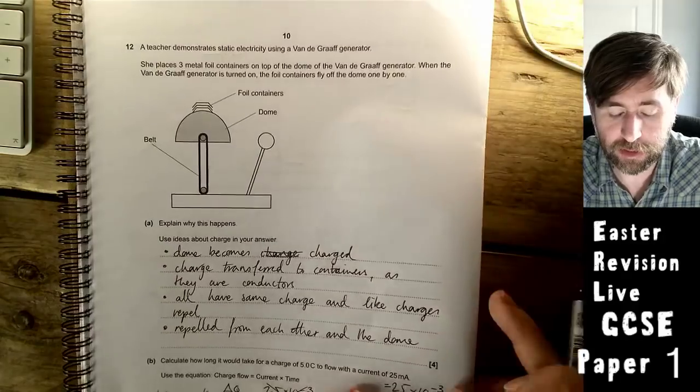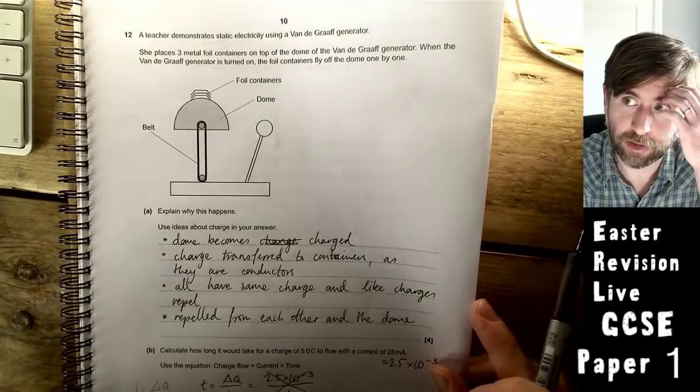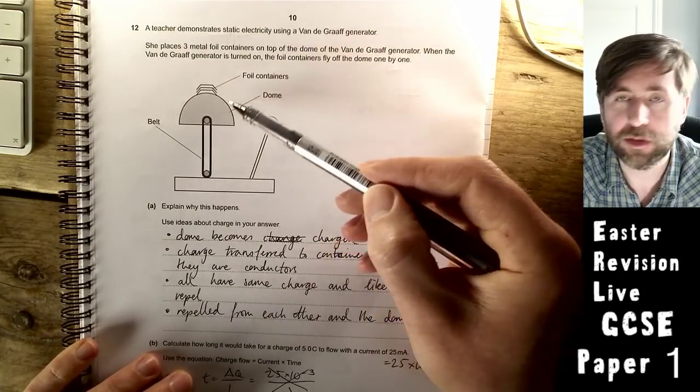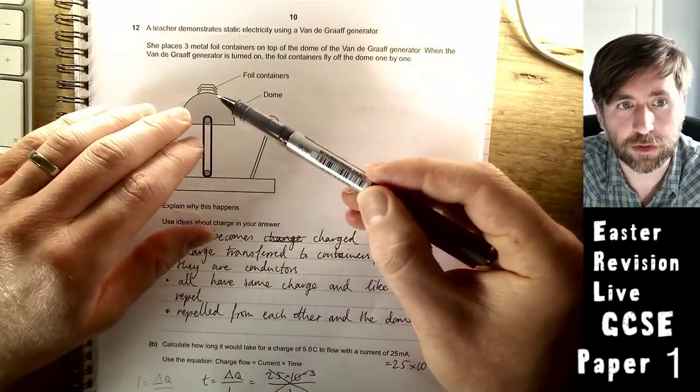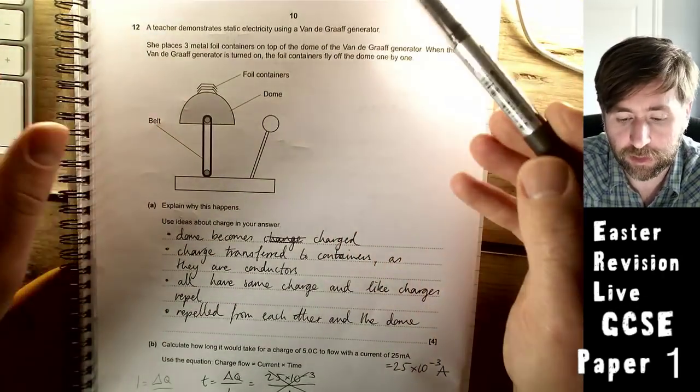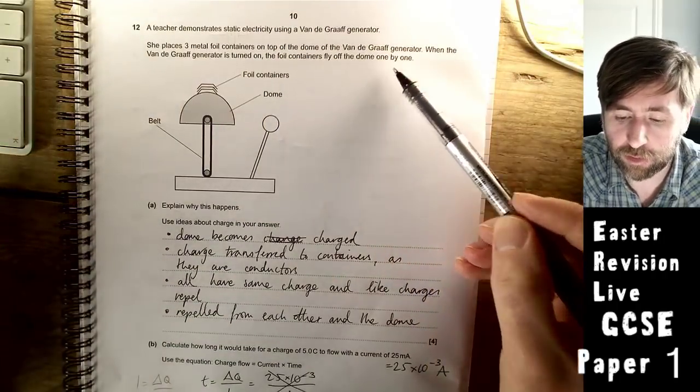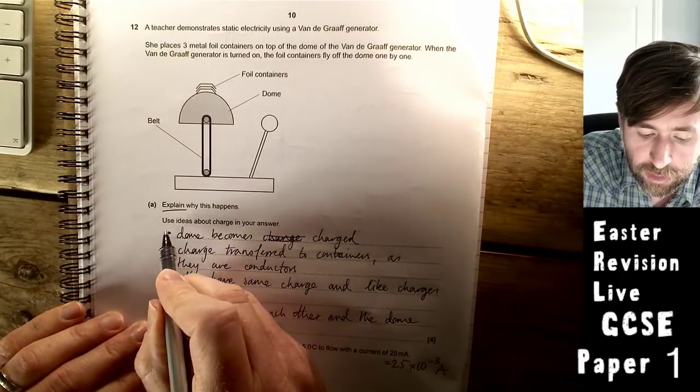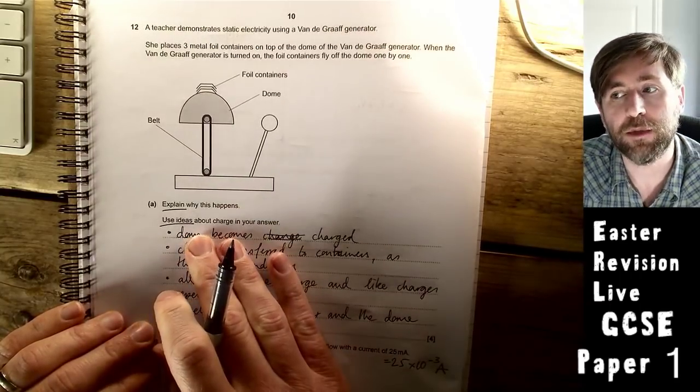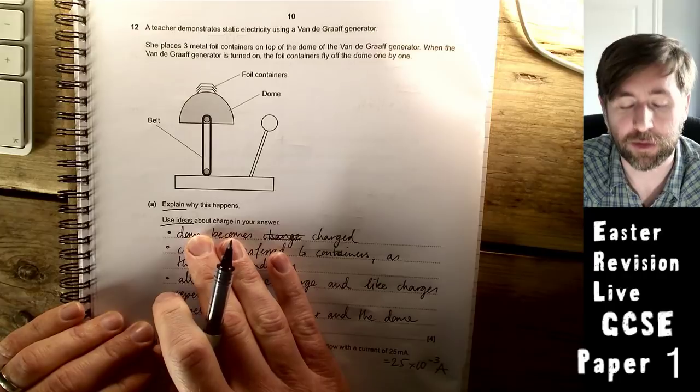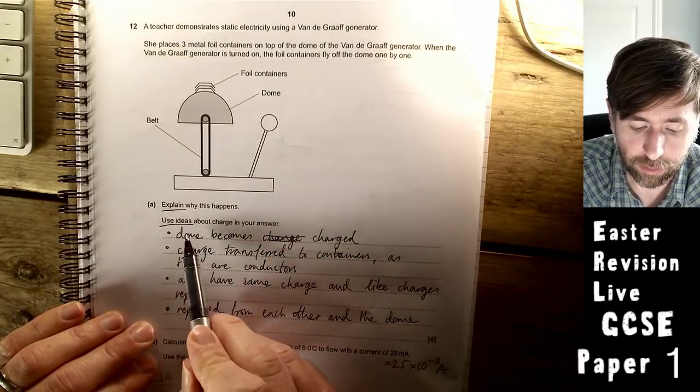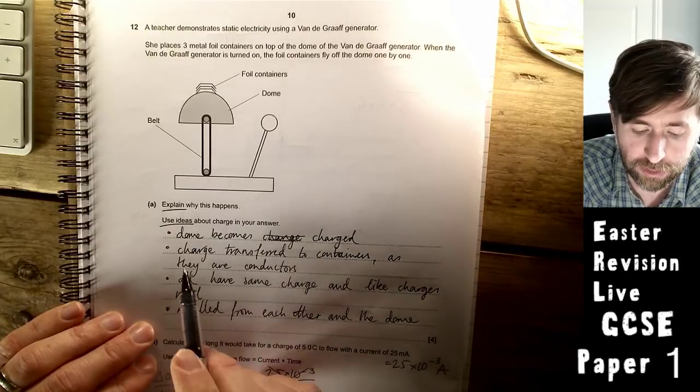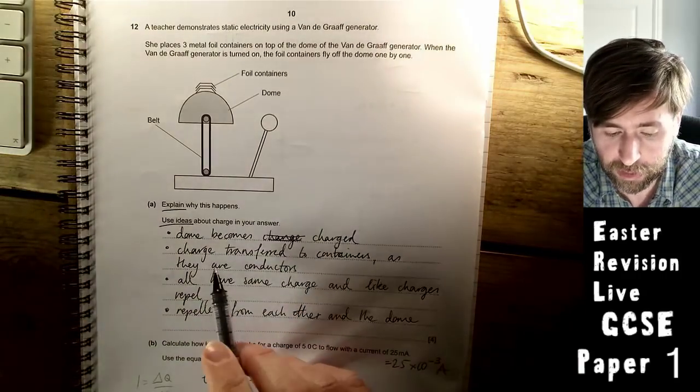Teacher demonstrates static electricity using a Van de Graaff generator. This is the really cool experiment. I love doing this one. You put some foil containers, turn on the Van de Graaff and off they go. The foil containers fly off one by one from the dome. Explain why this happened and use ideas about charge. You'd be amazed how many times I see where we say use ideas about something and people don't mention charge at all.